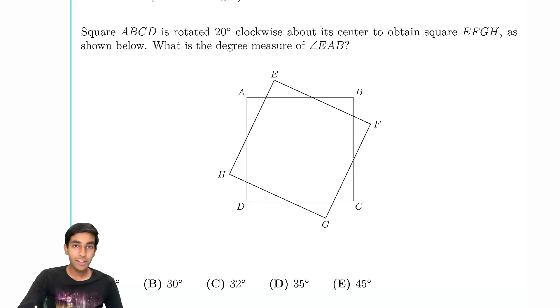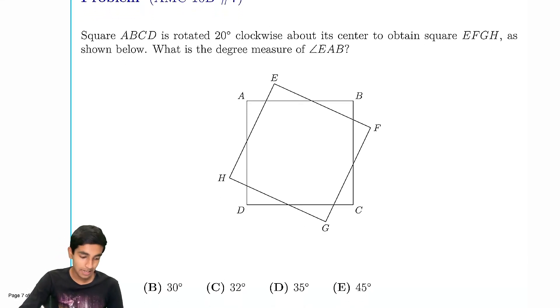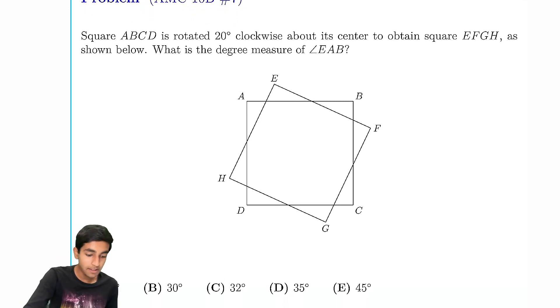Let's learn how to solve this square problem from the AMC-10b. Square ABCD is rotated 20 degrees clockwise about its center to obtain square EFGH. What's the measure of angle EAB?